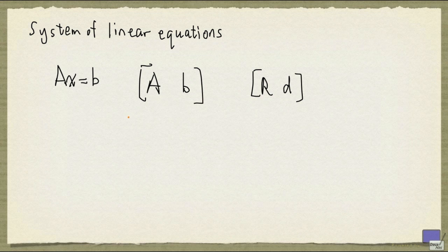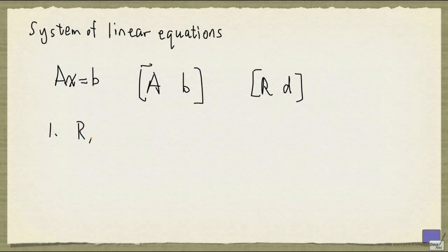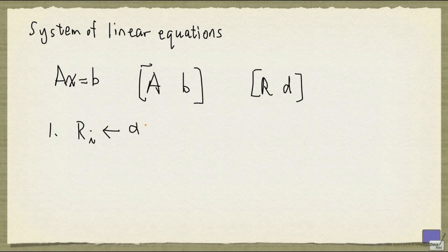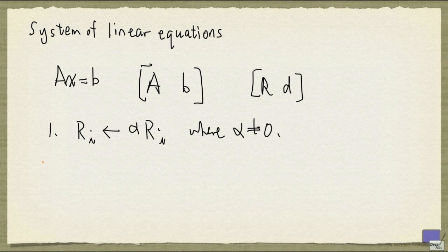We'll illustrate this with an example. And before we proceed, let's recall what elementary row operations are. The first operation you can perform is you can replace a row, say row i, with a constant multiple of the same row, where the constant is non-zero.